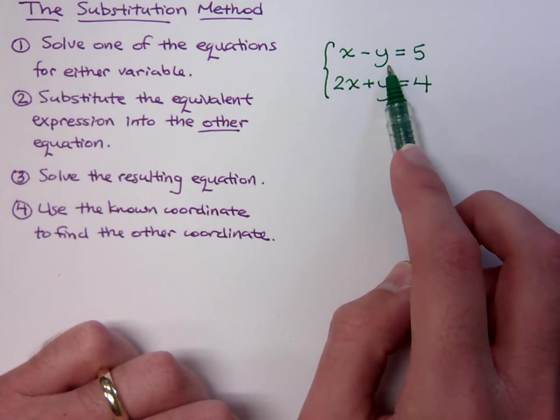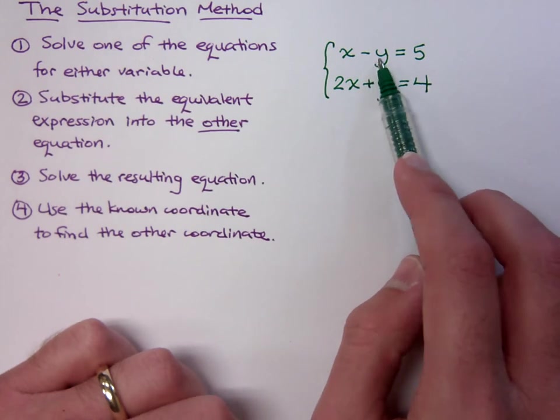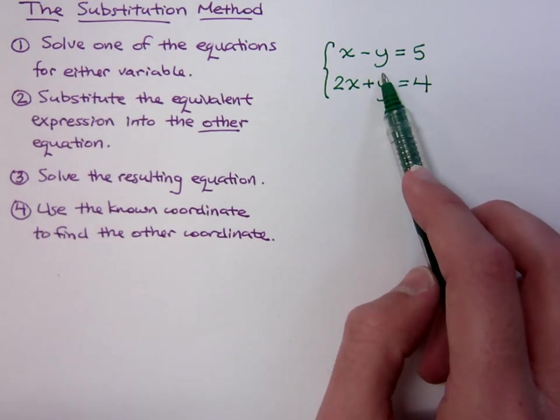If you solve for y though, you have to subtract the x and then you have to divide by the negative. Now dividing by the negative isn't bad, but we all know that the more steps we have, the more places we have for making mistakes.